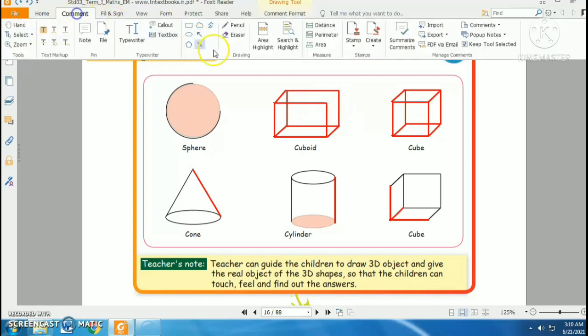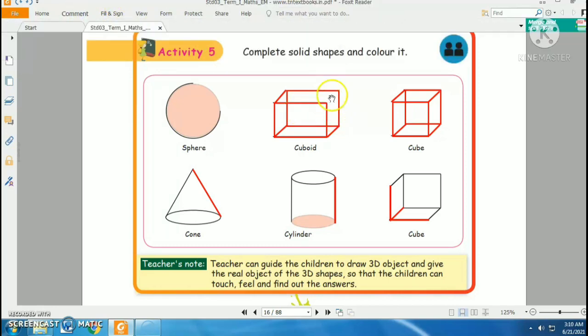And here in the cube, you can draw a line here, one line here, make this as a square like this, then join these points together. You get a cube.